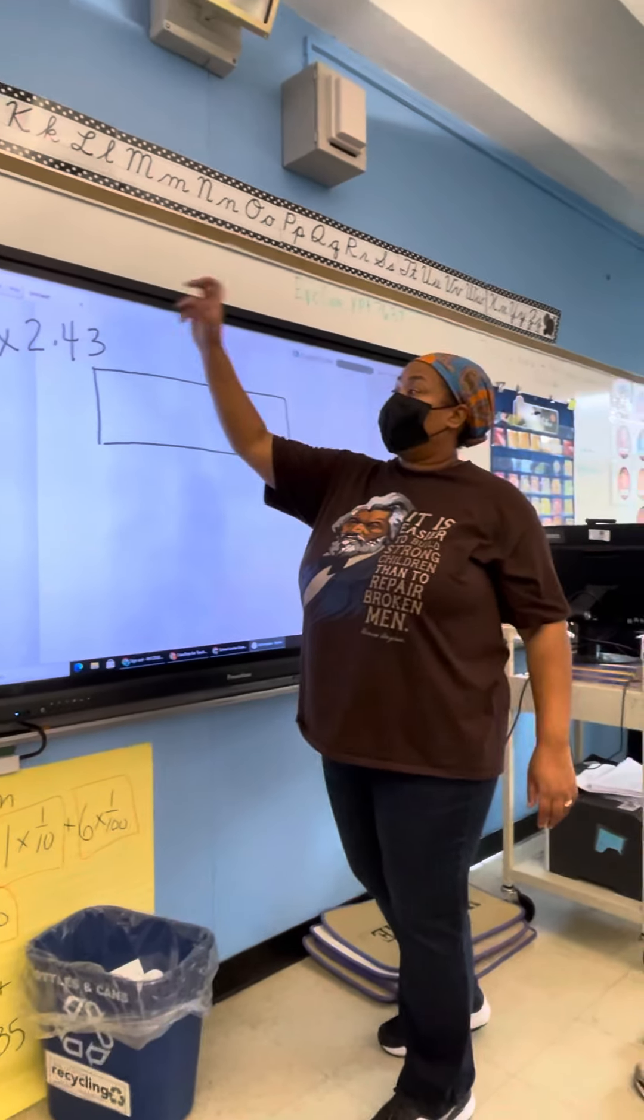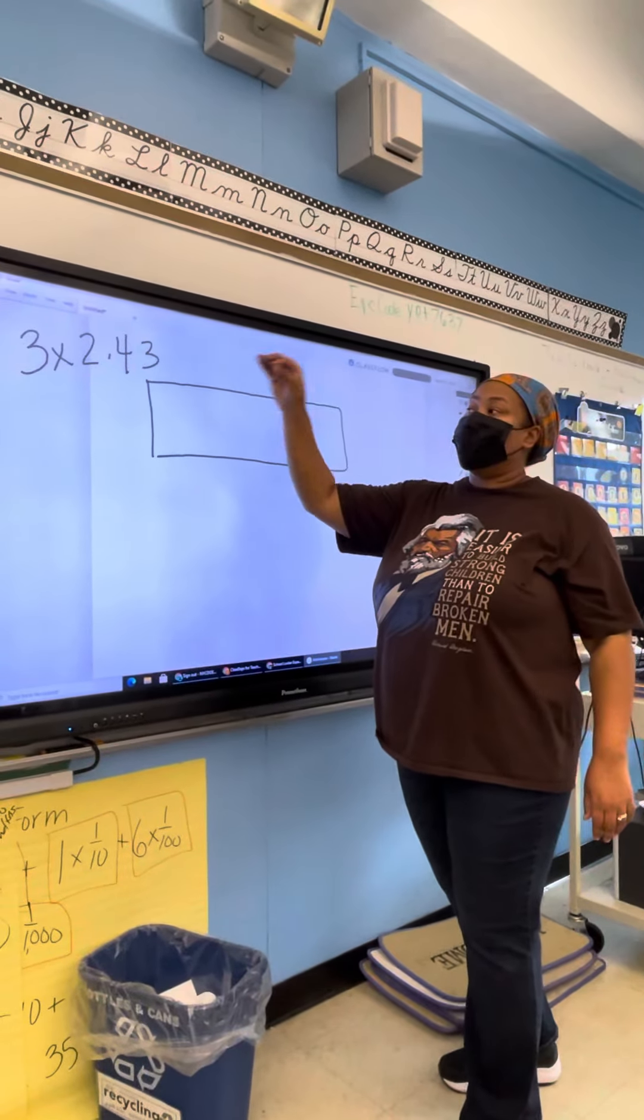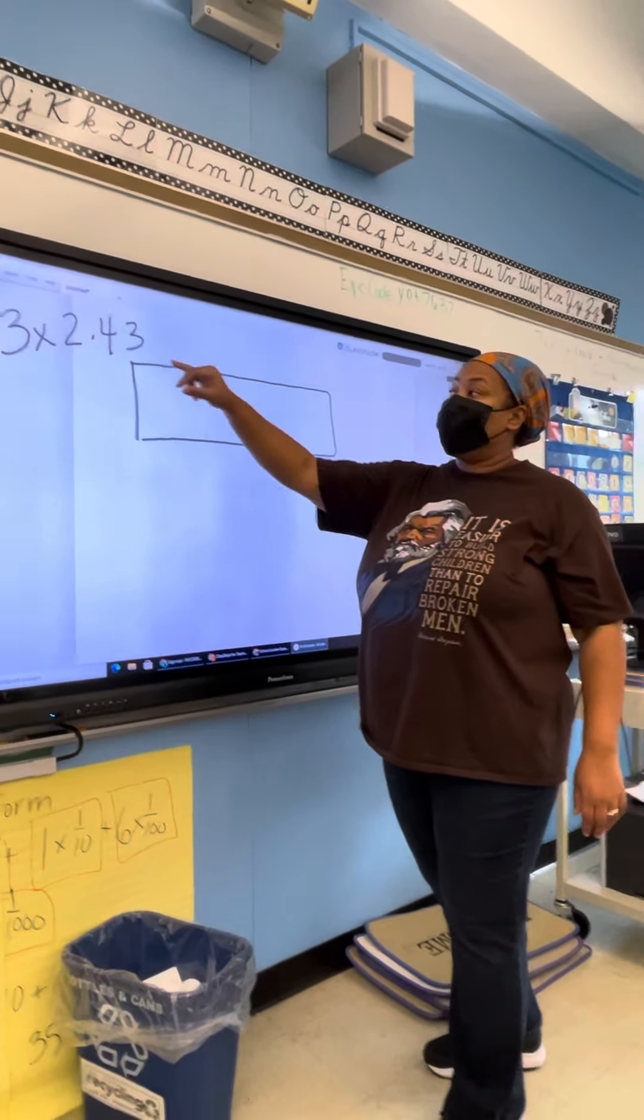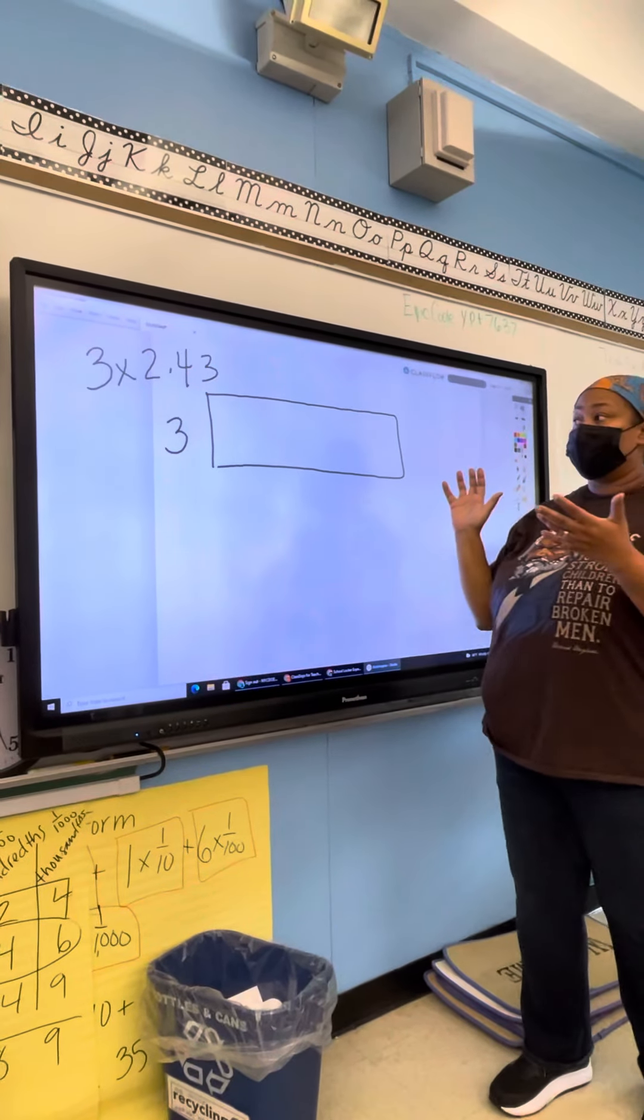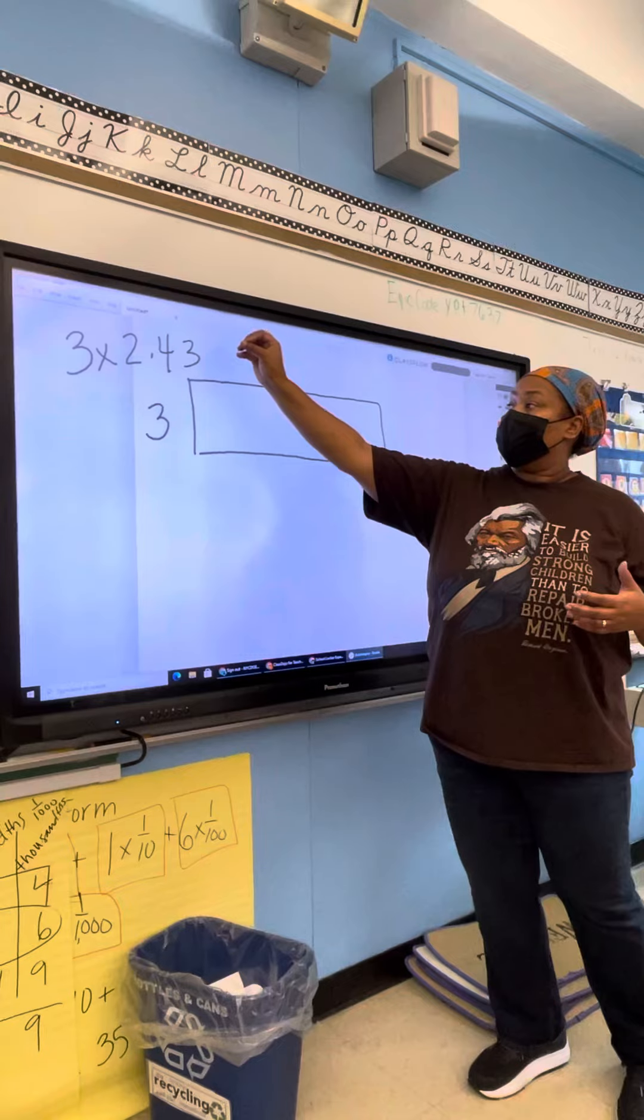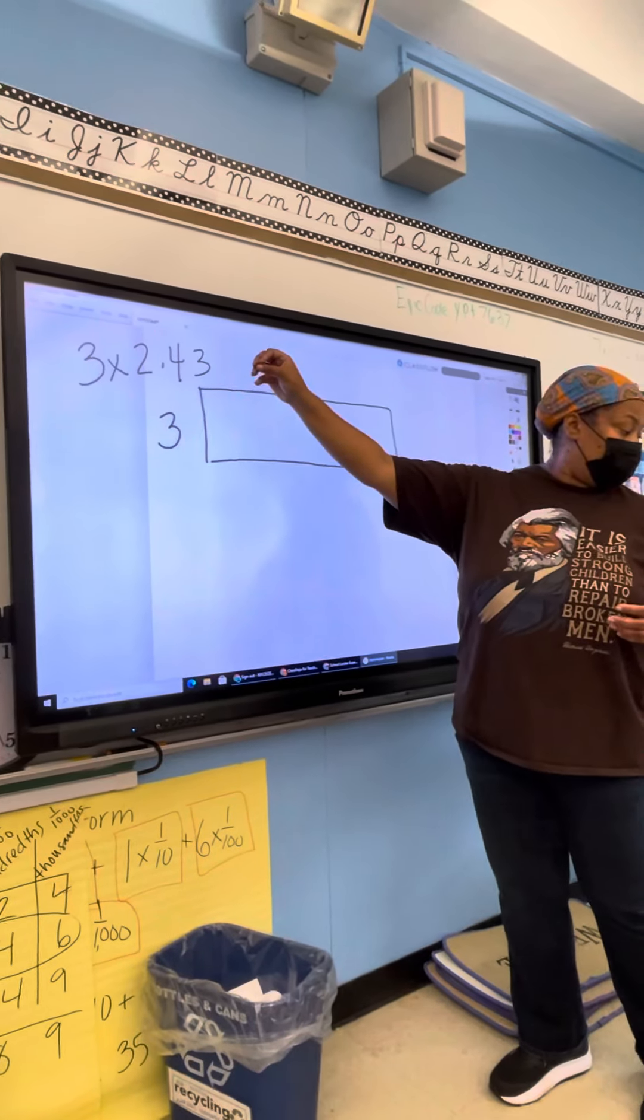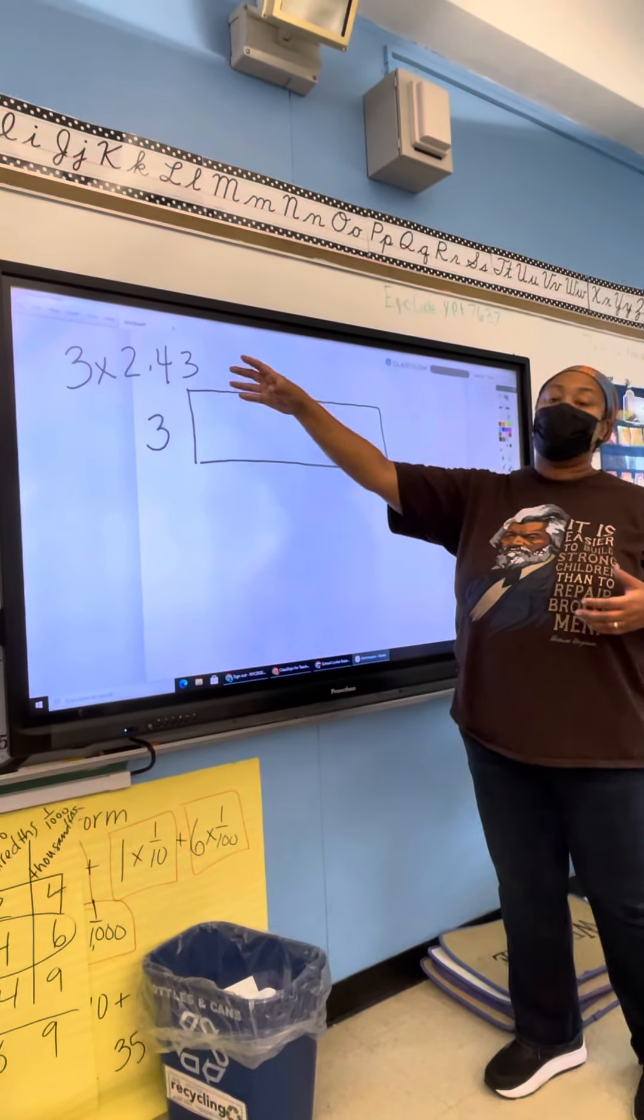Use the area model strategy to multiply 2.43 by 3. The first thing we're going to do is put our 3 on the outside of our big box because we're going to multiply each individual place value in this number by 3.